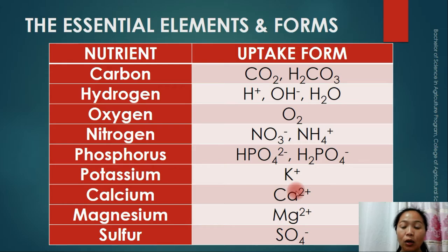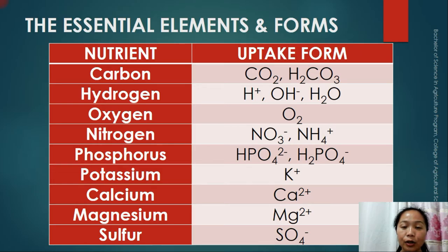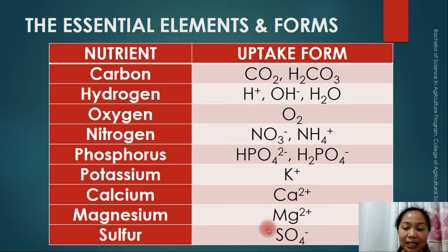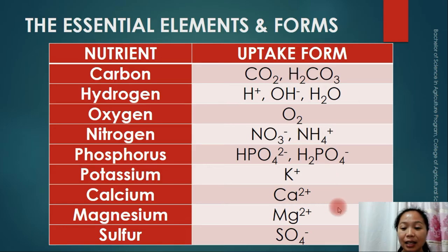For calcium, the uptake form is Ca²⁺. The more valence an element has, the stronger its adherence to clay colloids. Magnesium's uptake form is Mg²⁺ and sulfur's uptake form is sulfate (SO₄²⁻). These are the different uptake forms of the macronutrients that are readily available for plants to take up for growth and development.